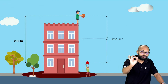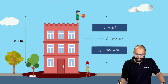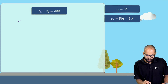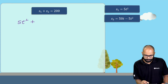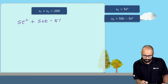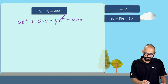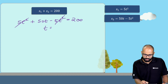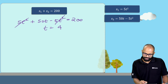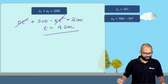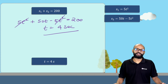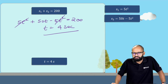We know s1 plus s2 equals 200. So: 5t² + 50t − 5t² = 200. Magically, the 5t² terms cancel out, giving 50t = 200, so t = 4 seconds. That is the answer — t equals 4 seconds.